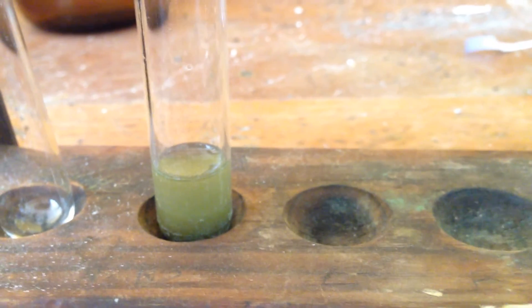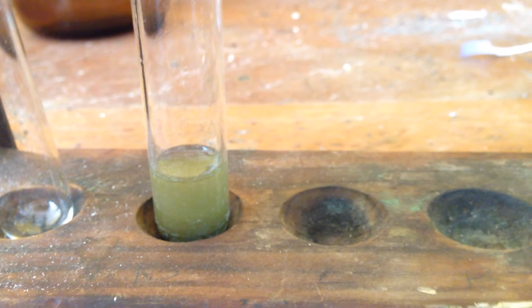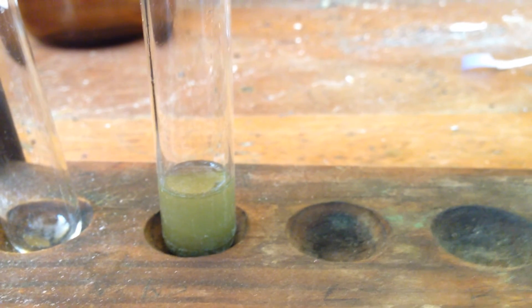You can see that it's got a horrible brown, dull, murky precipitate—not very nice at all. This is the test for an aldehyde using Fehling's solution.